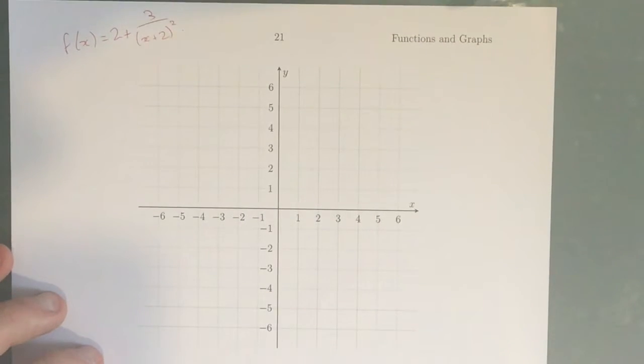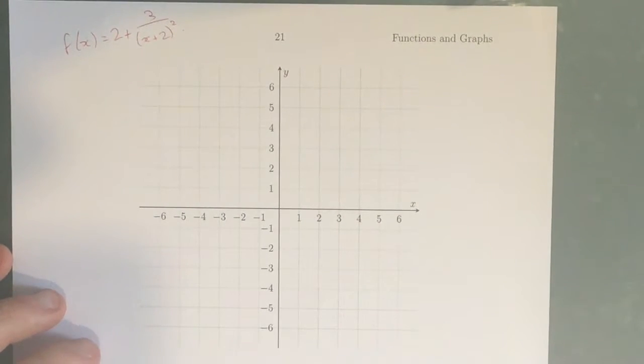Now with this sort of question, just keep in mind that we don't actually have to show any working for intercepts or asymptotes. All we need to do is make sure that they're labelled on the graph.